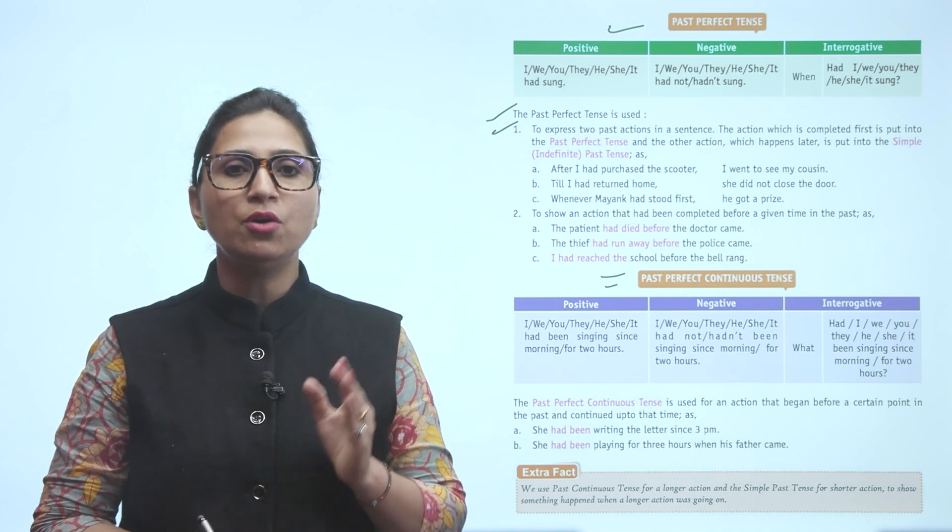In negative, for the subject in any form - I, you, they, he, she, it - you use 'had not' or 'hadn't been singing since morning' or 'for two hours.' 'For' is for period of time, 'since' is used for exact time.